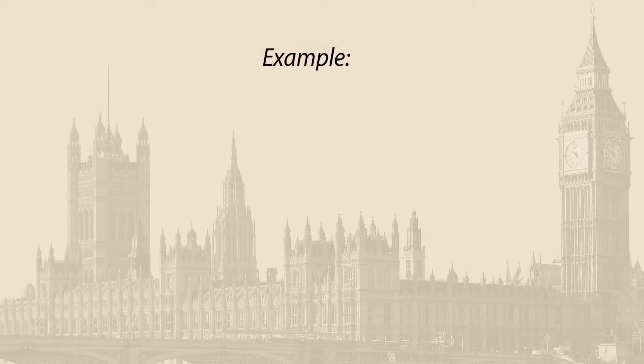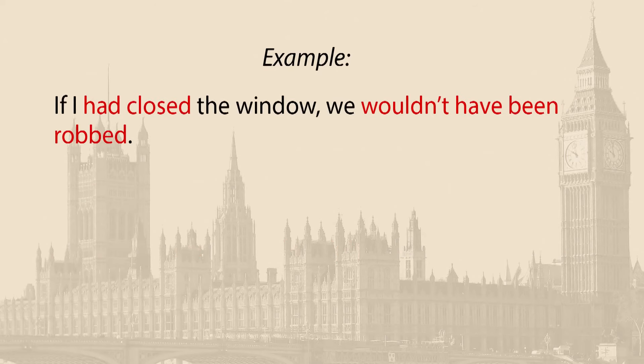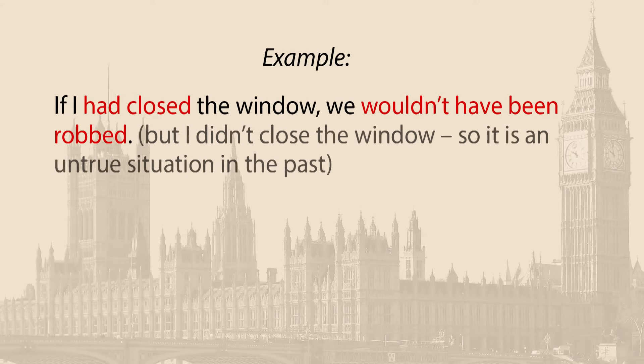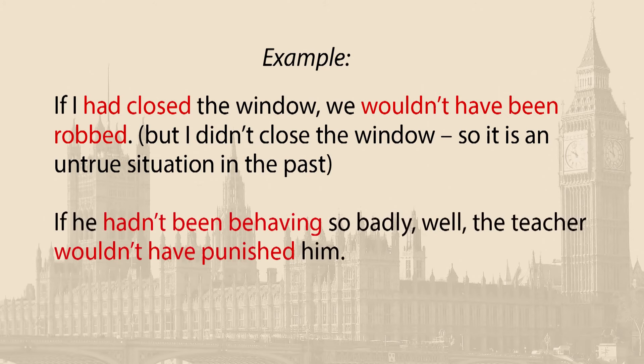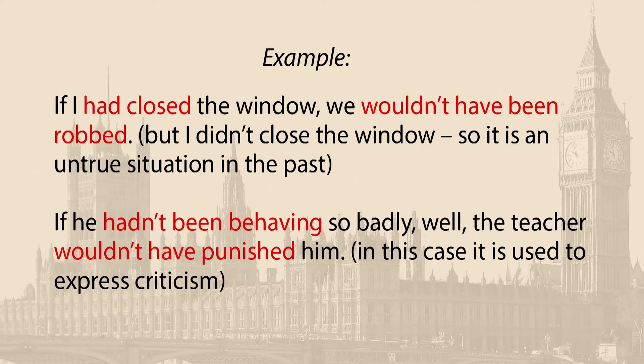For example, if I had closed the window, we wouldn't have been robbed. But I didn't close the window, so it is an untrue situation in the past. If he hadn't been behaving so badly, the teacher wouldn't have punished him. In this case, it is used to express criticism.